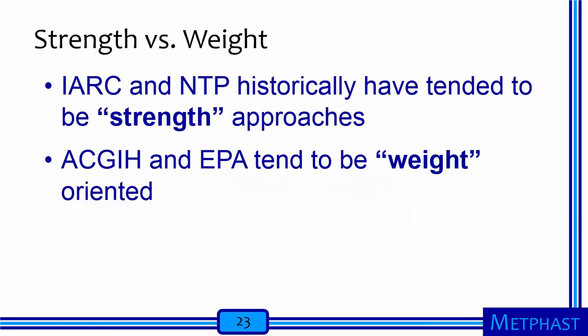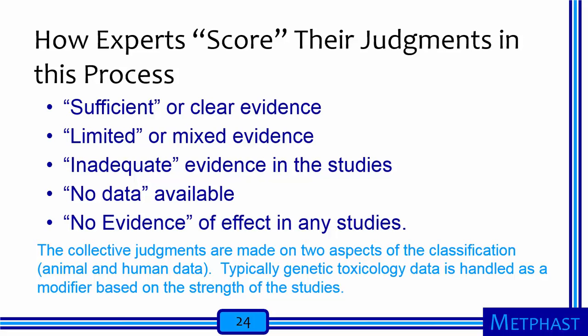IARC and NTP historically have used strength approaches, while ACGIH and EPA tend to use weight-based approaches. Experts score their judgment of evidence using the following categories: sufficient or clear evidence; limited or mixed evidence; inadequate evidence in the studies; no data available; and no evidence of effect in any studies. The collective judgments are made on two aspects of the classification — animal and human data. Typically, genetic toxicology data is handled as a modifier based on the strength of the studies.